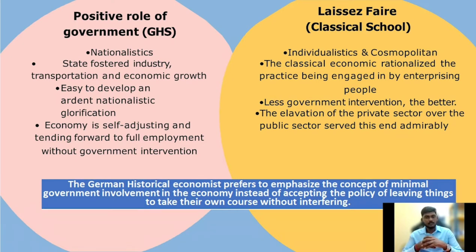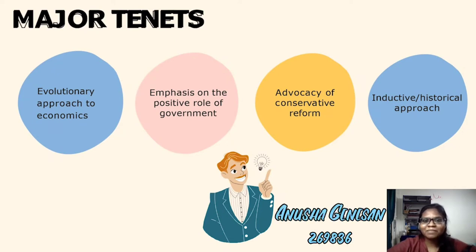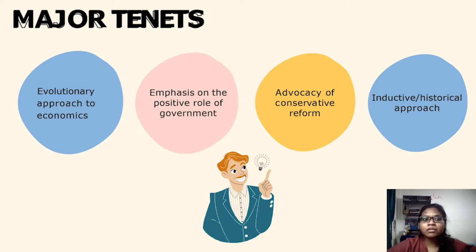That's all from me. Thank you. Good morning to Doctor and fellow classmates. I am Anusha Ganesan, metric number 698-36. I will be continuing on the major tenets. The German Historical School has four principles: the first is evolutionary approach to economics; the second is emphasis on the positive role of government; the third is advocacy of conservative reform; and the fourth is the inductive or historical approach.